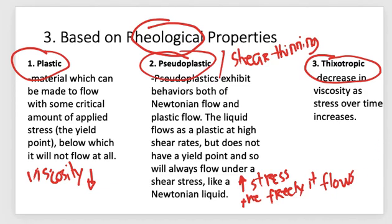Thixotropic gels show a decrease in viscosity as stress over time increases. Thixotropy is a property of certain gels which liquefy when subjected to vibratory forces like shaking and agitation, and then solidify again when left standing or undisturbed.